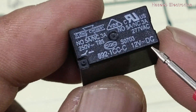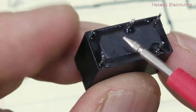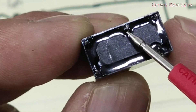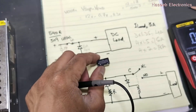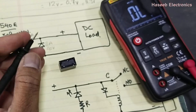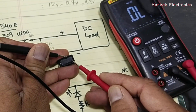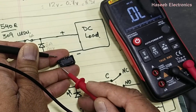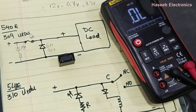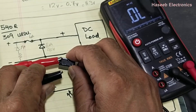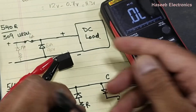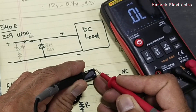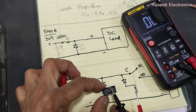We are selecting a 3 ampere relay — it is a 12 volt DC relay, which means the coil is 12 volt operated. Set the multimeter to continuity mode to identify the pins. This pin is common, this one is normally closed, and this is normally open. When we apply 12 volts to the coil, these two points will make contact.